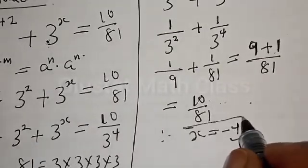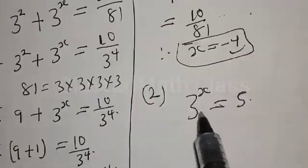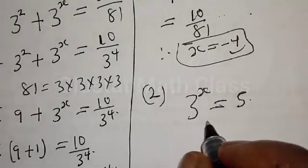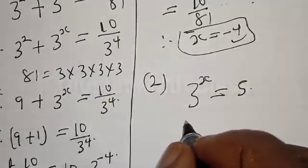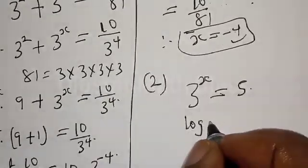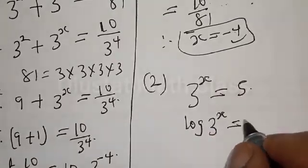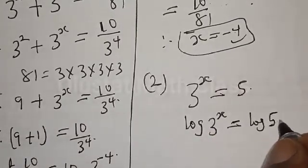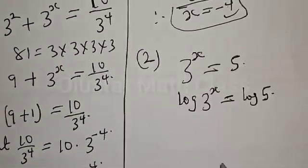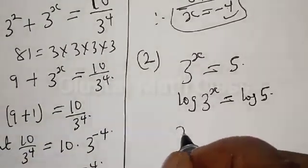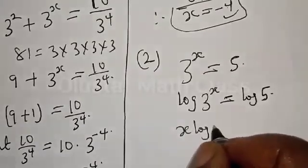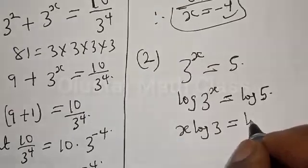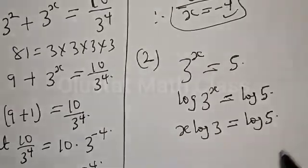Let's quickly solve the second question. We have 3 raised to the power x is equal to 5. Let's take the log of both sides: log of 3 to the power x is equal to log 5. Then we have x log 3 is equal to log 5.